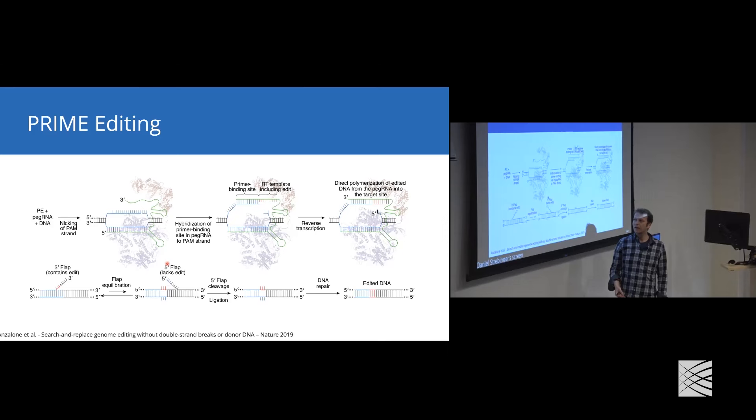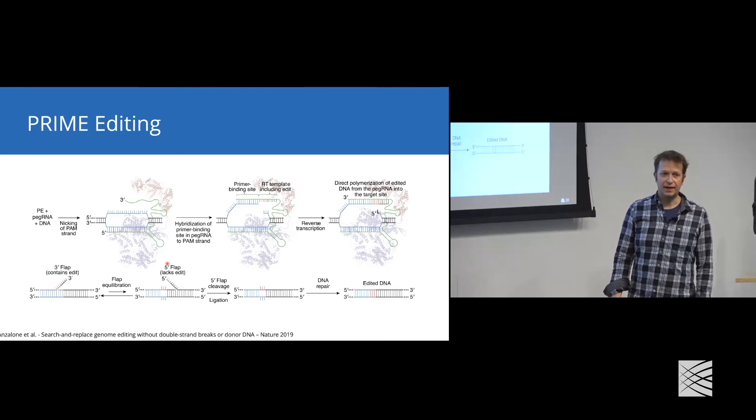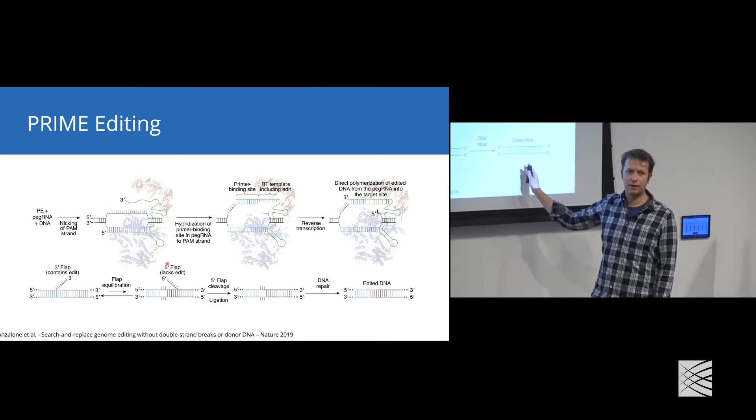Luckily there's something called flap equilibration where every so often our edit would be paired with the target, and you have a five prime end from the endogenous flap which can be cleaved. If we cleave this flap away and religate the DNA, we get this hybrid DNA which contains on one hand our edit and on the other hand the wild-type sequence. Going through DNA repair, it happens every so often that we get edited DNA. The Liu lab also developed more sophisticated strategies to increase the probabilities of this lower path to lead to edited DNA.